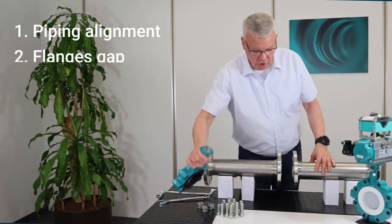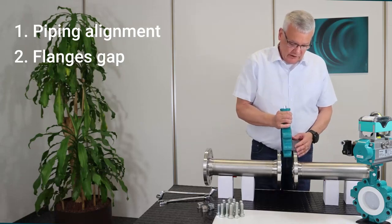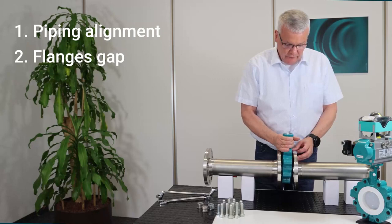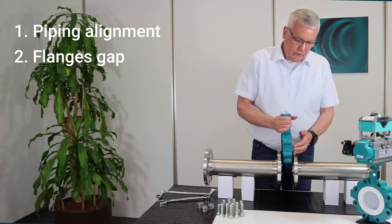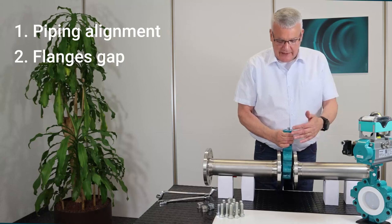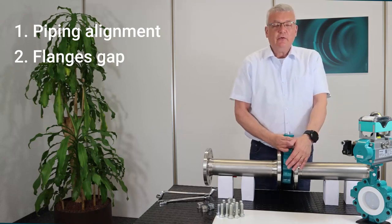Then you should ensure that the gap between the flanges is wide enough to be able to insert the valve without force, otherwise you could dislodge the liner from the body. If the gap is not wide enough, you need to use a spreader.